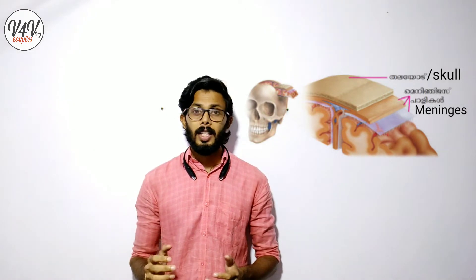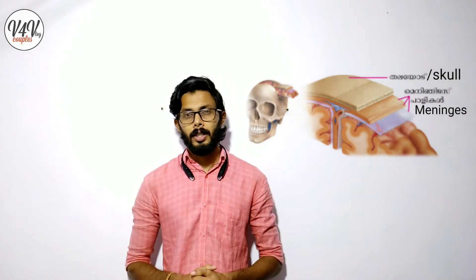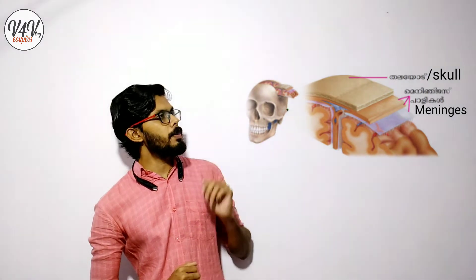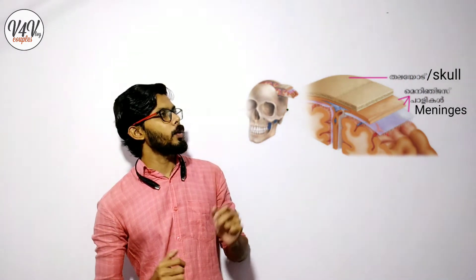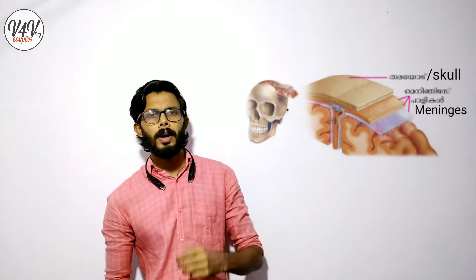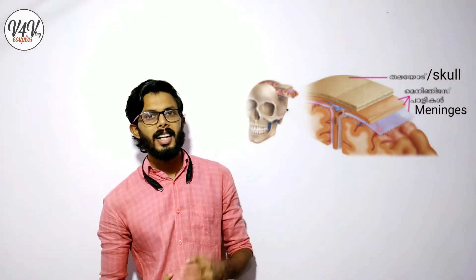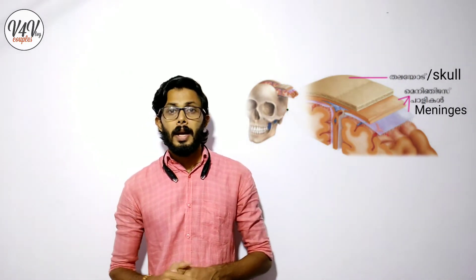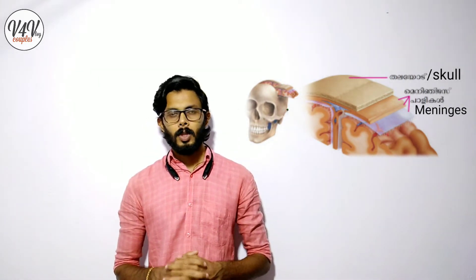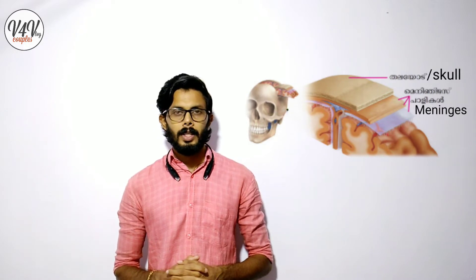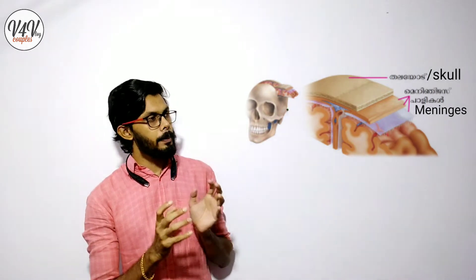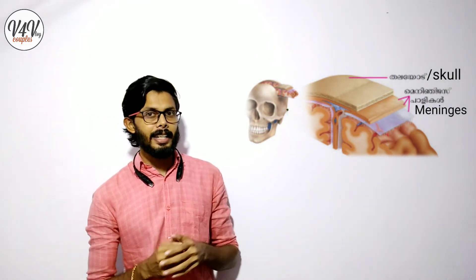It's like skulls — this is the skull. The skull is actually a protective layer. Of course, the skull is not alone — it uses three layers, called meninges. There are three layers.